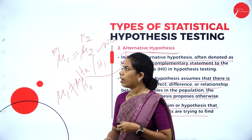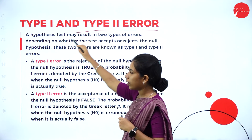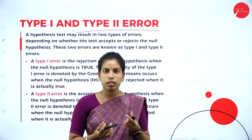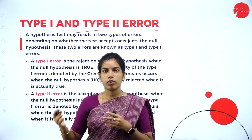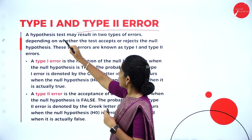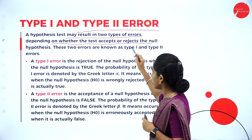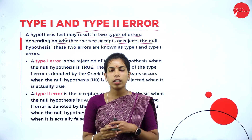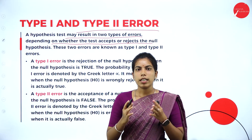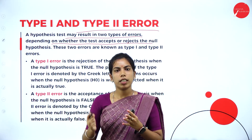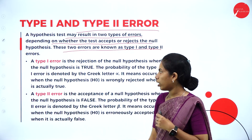Type 1 and Type 2 errors arise after applying the hypothesis test. Hypothesis testing may result in two types of errors depending on whether the test is accepted or rejected, completely based on the null hypothesis — whether the means are the same or different.